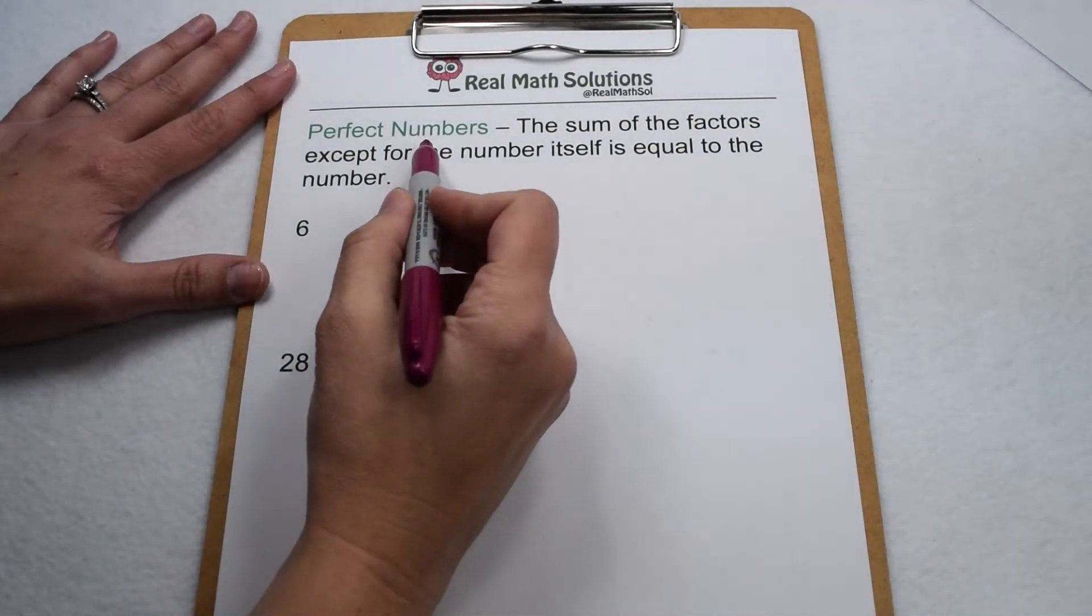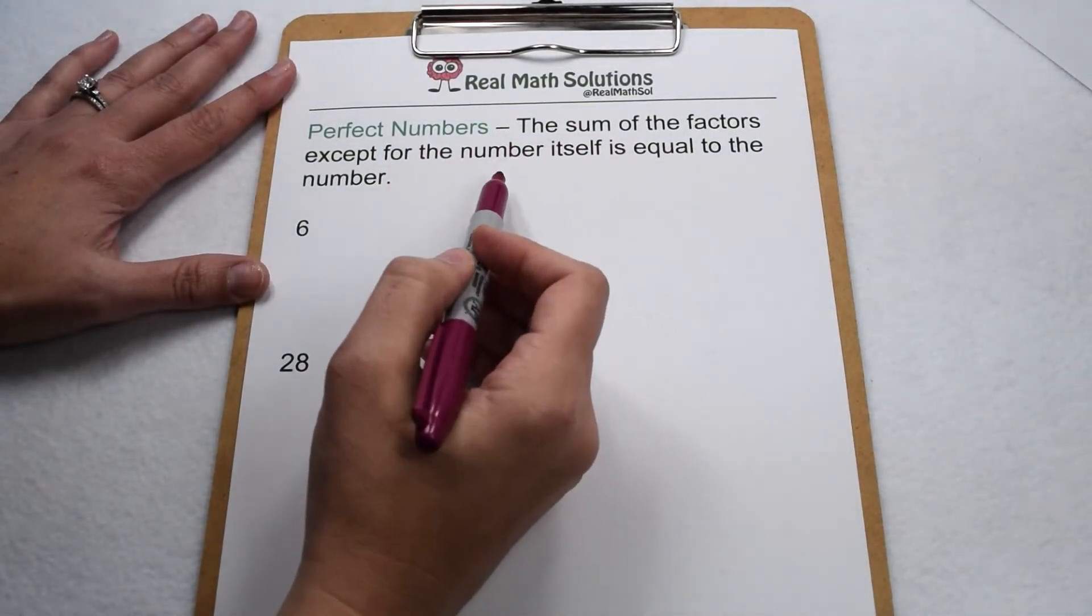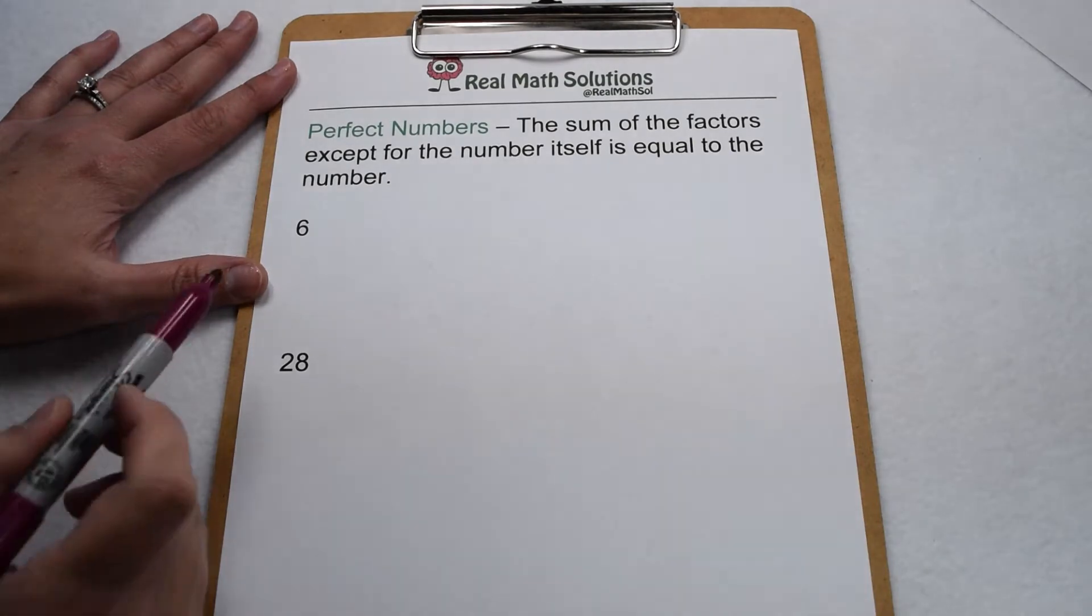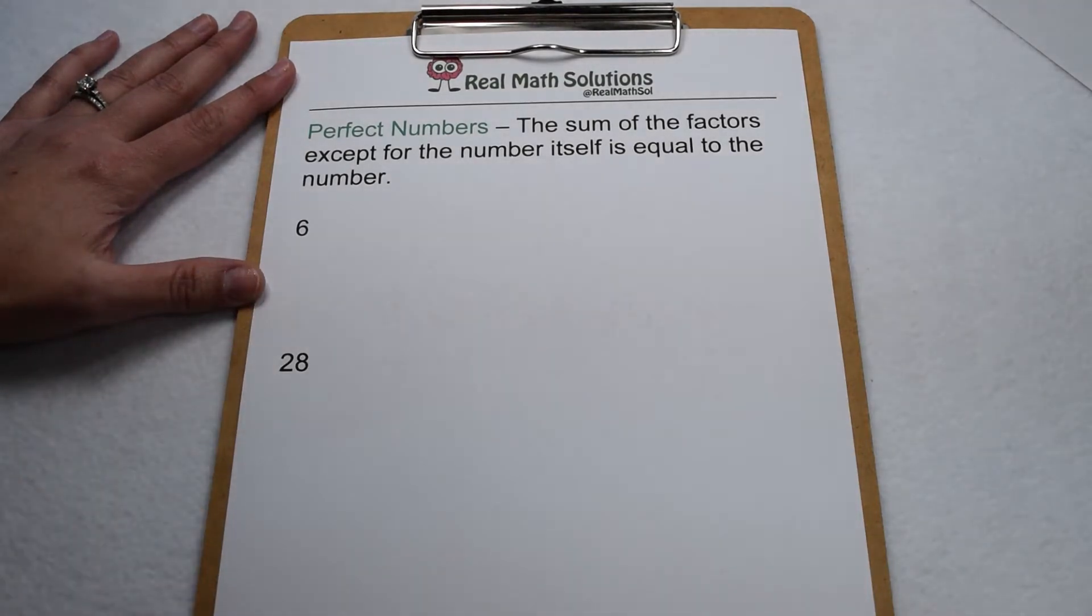If a number is a perfect number, that means the sum of the factors, except for the number itself, is equal to the number. 6 and 28 are the only perfect numbers between 1 and 100, so let's test them out.